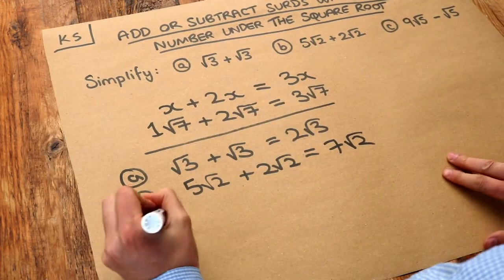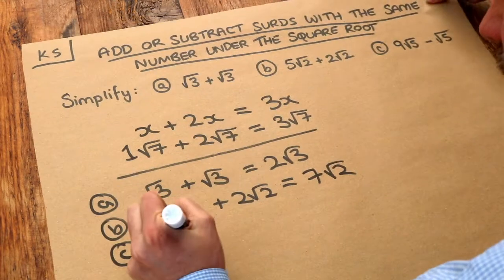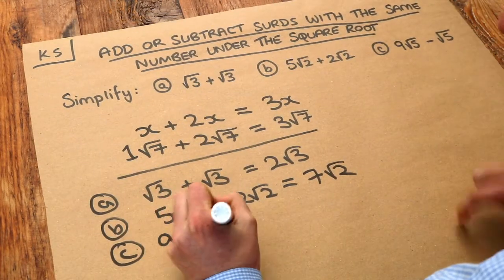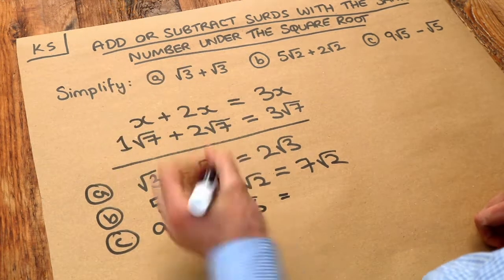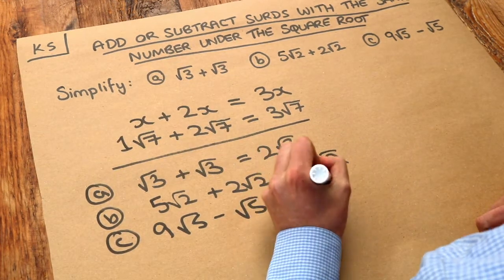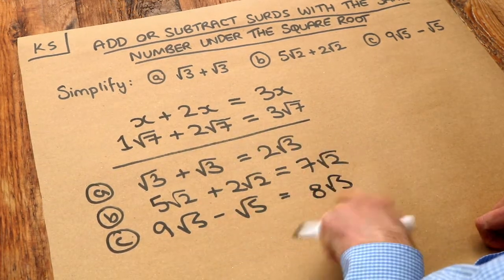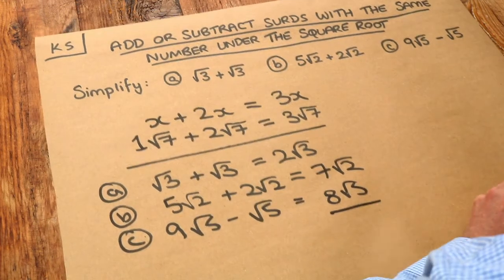And finally, if we have nine lots of root 5 and we subtract one lot of root 5, we would have eight lots of root 5 left over. So we just did 9 minus 1 is 8, and that would be the final answer.